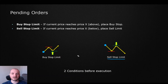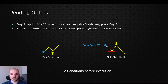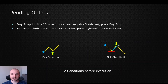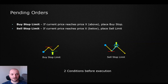On the other hand, we have the sell stop limit, which does a very similar thing just in the opposite direction. We're telling the platform: let the price reach that zone first — this level right here — then if it provides a pullback to the upside, this is where I would like to see my sell order being executed.